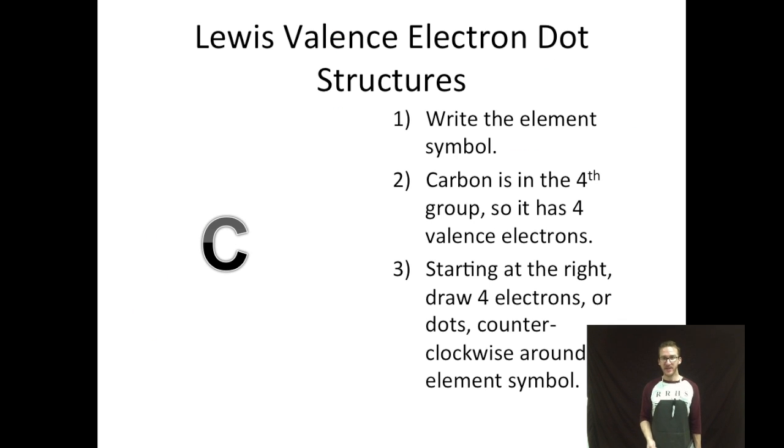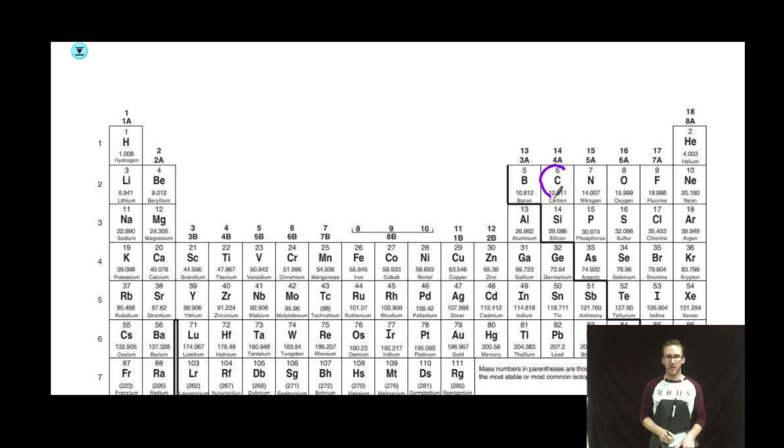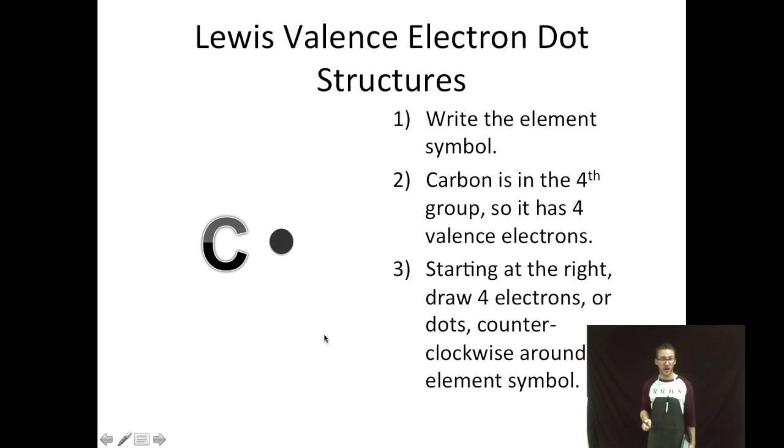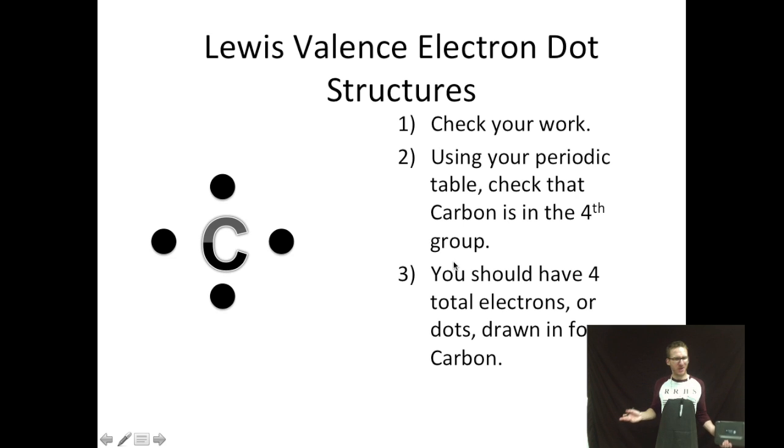Some quick practice. Let's take a look at carbon. Carbon is in the fourth group and therefore has four valence electrons. Carbon, fourth group. Starting at the right every 90 degrees. Lewis valence electron dot structure for carbon. Check your work. Use the periodic table. Check that carbon's in the fourth group. Four total valence electrons. Each of those dots representing one of them. Keep in mind, these are just the valence electrons.